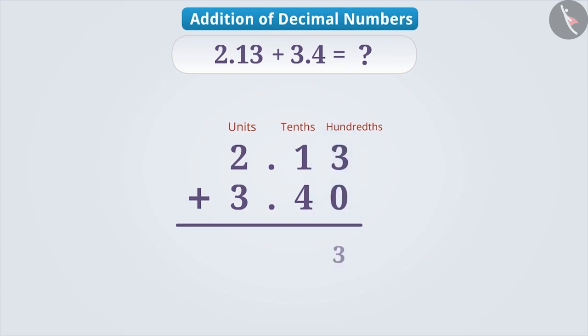Here, the sum of 3 and 0 is 3, the sum of 1 and 4 is 5, the sum of 2 and 3 is 5. Therefore, the sum of 2.13 and 3.4 is 5.53.